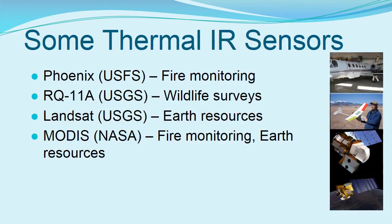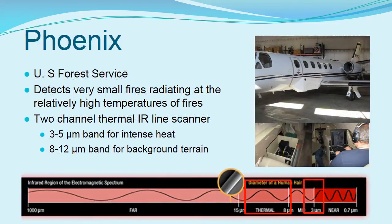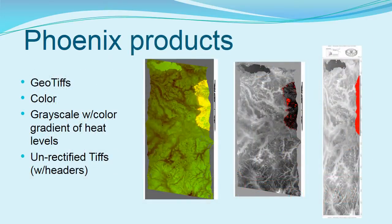We'll now look at a few thermal infrared sensors and how they have been applied. To detect very small fires radiating at relatively high temperatures, the US Forest Service uses the Phoenix sensor, which detects energy in the 3 to 5 micrometer band. It can detect a heat source smaller than a basketball and only 100 degrees Fahrenheit above the background temperature from 10,000 feet altitude. Here are some examples of Phoenix images; image interpreters receive extensive training and must meet qualification standards to create these products.